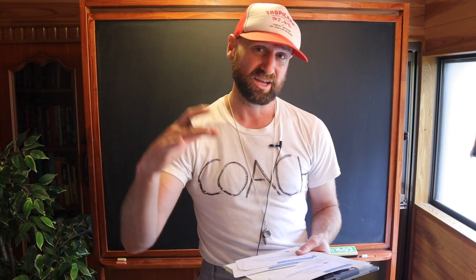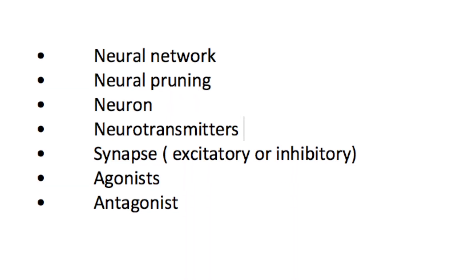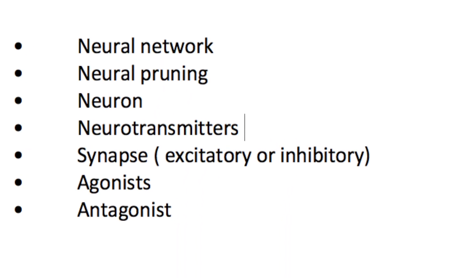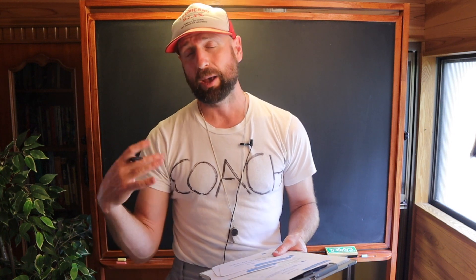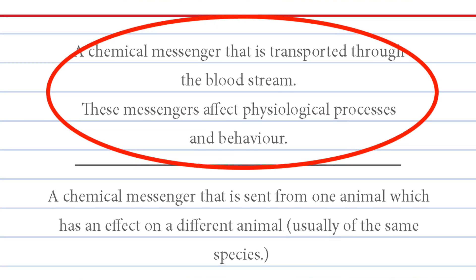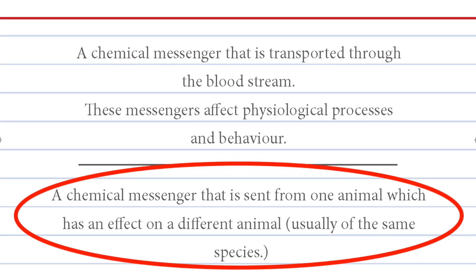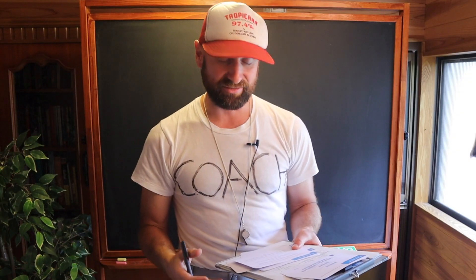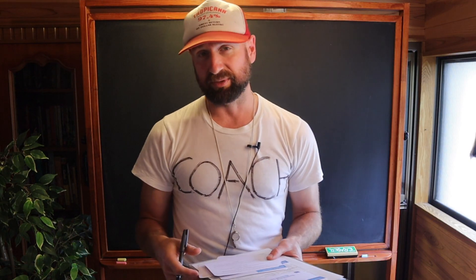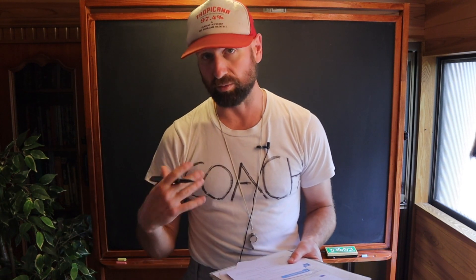In fact, that's my advice for all of these neurotransmitter topics — neurons, synaptic pruning, neural networks, excitatory and inhibitory transmitters, agonists, antagonists — being able to draw diagrams is really helpful. A hormone is a chemical messenger that's transported through the bloodstream. And a pheromone is a chemical messenger that's sent from one animal and has an effect on a different animal, usually of the same species. It's still a chemical, but pheromones are released and they affect a different animal, whereas hormones affect the organism which they're traveling in.